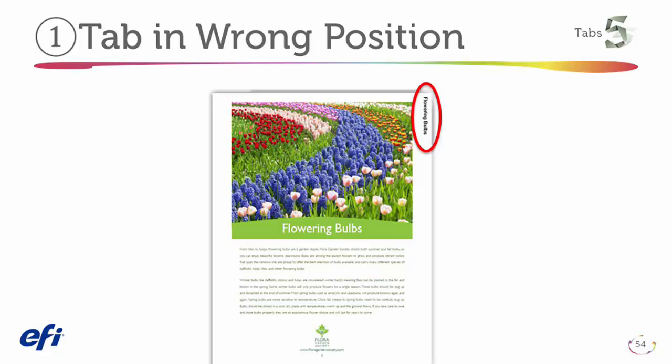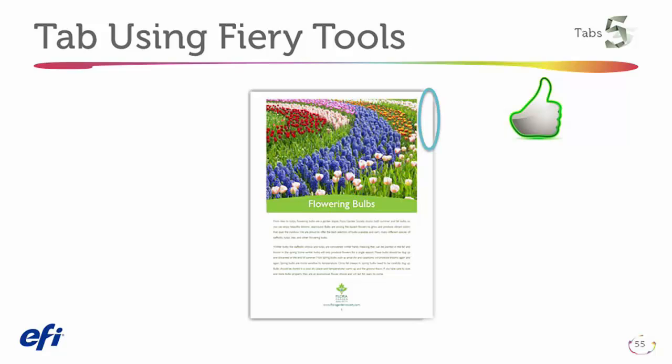In this example, only part of the tab text made it onto the tab ear when the PDF is printed using a tab stock. And because tab stocks are selected at operation time, and because each digital printer may handle tab insertion differently, you want to use a digital pre-press application like Fiery JobMaster to determine the correct placement of tabs in a job.